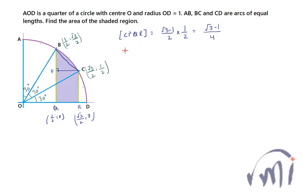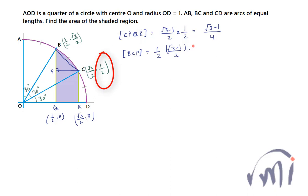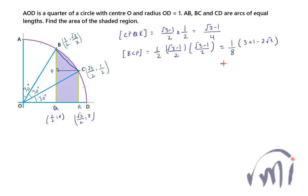For right-angle triangle BCP, the area is (1/2) × base × height. The base is (√3 − 1)/2, same as the rectangle. The height is the y-coordinate of B minus the y-coordinate of C, which is also (√3 − 1)/2. So the area is (1/8)(√3 − 1)² = (1/8)(4 − 2√3) = (2 − √3)/4.